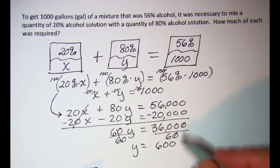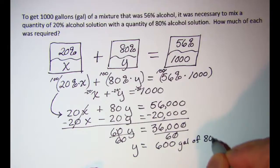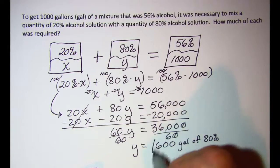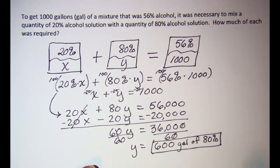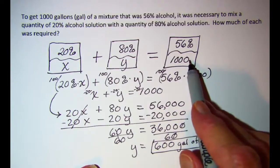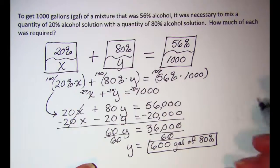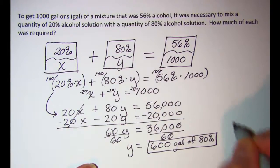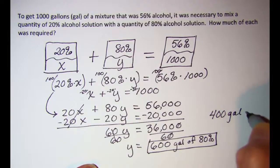So it looks like 600 gallons of 80 percent. Now if I need a total of a thousand gallons for my final mixture and 600 gallons is the 80 percent, that means 400 gallons of 20 percent.